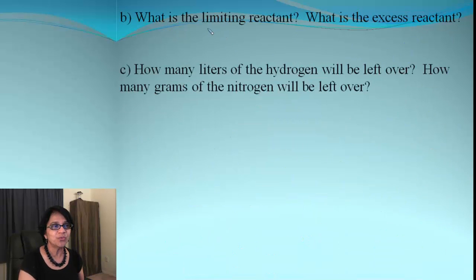So the question here is, what is the limiting reactant? This is the one which gave us the least amount of product, and that was nitrogen. And then what was the excess one? That was the other one which was hydrogen.